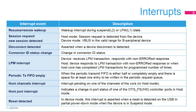Interrupts from this USB block can be triggered by a large number of events or state changes. This slide and the following three slides show all the events that can trigger an interrupt. These interrupt sources are diverse, ranging from events related to low power management and OTG to events related to normal host behavior and regular USB reset and disconnect events.